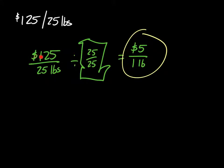I started by copying it, $125 per 25 pounds, or over 25 pounds, or divided by 25 pounds. And I know that I want to get from 25 pounds to 1 pound, and I do that by dividing 25 over 25, which is a giant 1, or multiplying it by 1 25th. 125 divided by 25 is 5. 25 divided by 25 is 1. And you use the same units, so dollars and pounds.